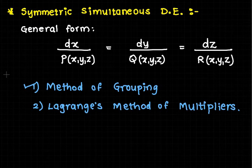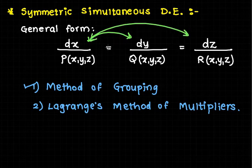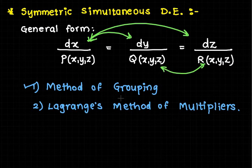In the method of grouping, we consider any two ratios — first and second, first and third, or second and third — and convert the selection into variable separable form. After converting those equations into variable separable form, we simply integrate and find one solution.